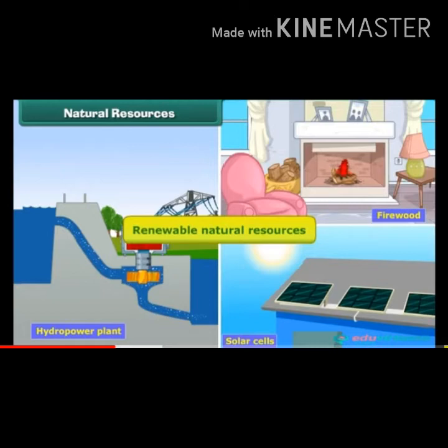Renewable resources are a gift of nature. They will be renewed or regenerated. Some examples are solar energy, air, water, wind, soil, plants and so on. Air is needed for breathing. Water is needed for drinking, washing, cooking and several other purposes. Energy obtained from the sun is called solar energy. It is used for street lighting, batteries, water heaters and solar cookers. Wind energy is used to produce electricity, dry grains and draw water from the wells.